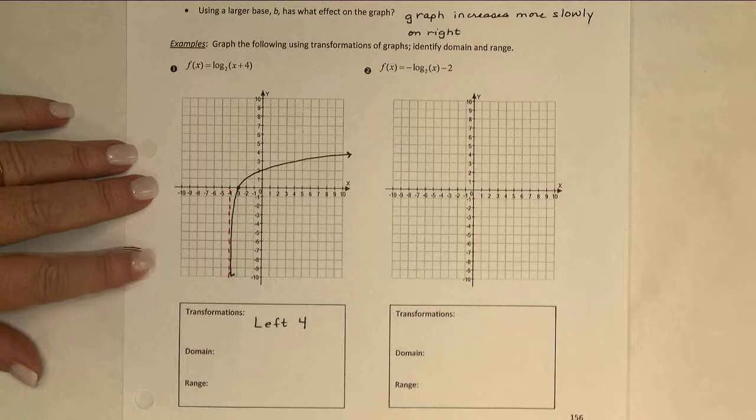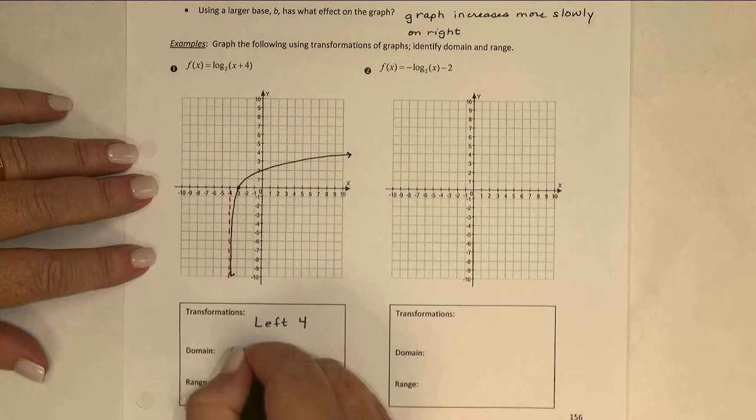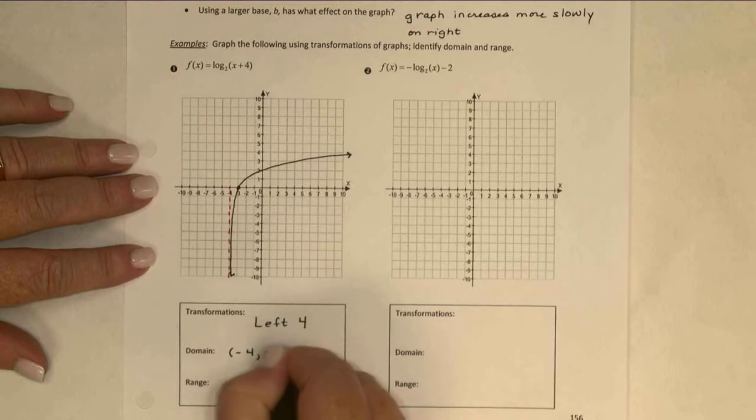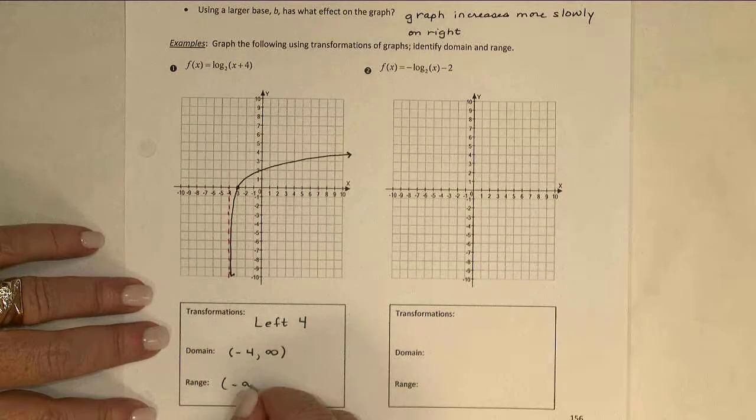For my domain, all of my x-values are larger than negative 4. So this would go from negative 4 to infinity, and the range still goes from negative infinity to positive infinity.